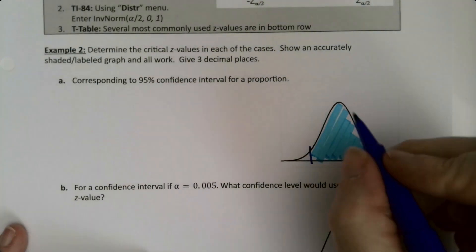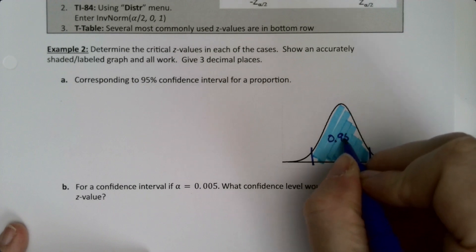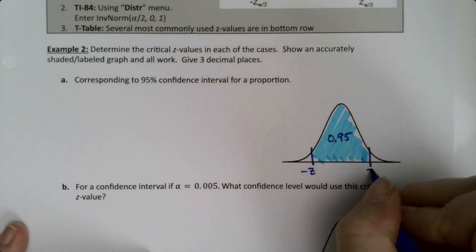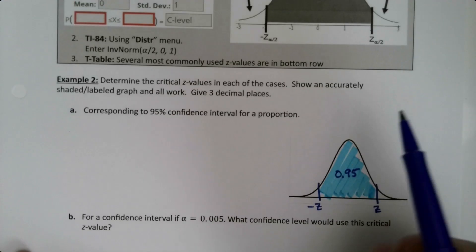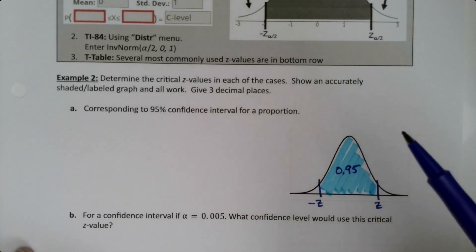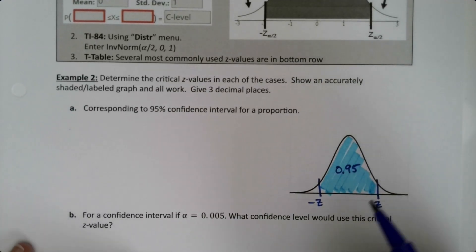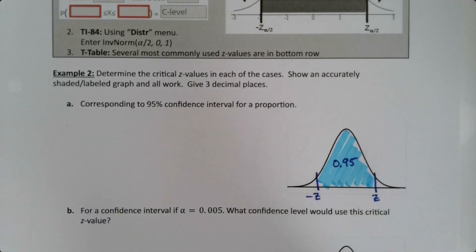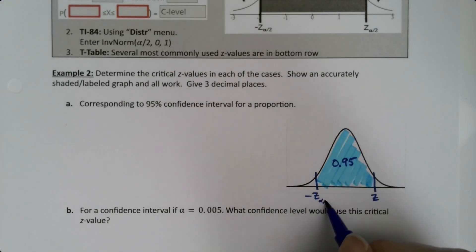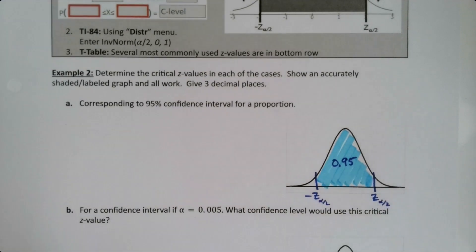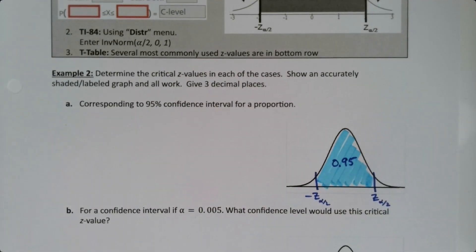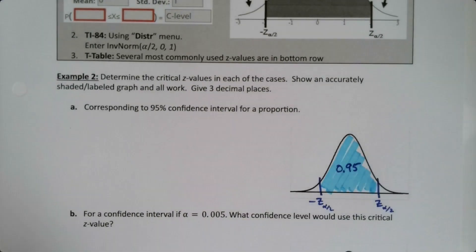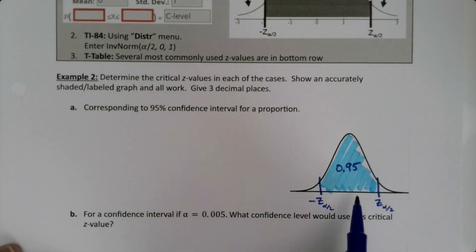So this is 0.95 in the center. I have my negative z and my positive z. And then the alpha over 2s are actually just a notation thing. So if you want to draw them, you can, but I'm not requiring it. So if you want to write it over here, it's just a subscript. It's just a notation. It relates to the graph, but it's fine. Okay, so how do we find these?